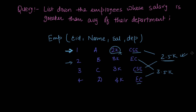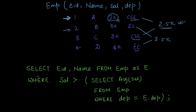So we will write the query like this: SELECT eid, name FROM employee AS e — we alias the employee table as e for the record we are currently examining — WHERE salary is greater than...